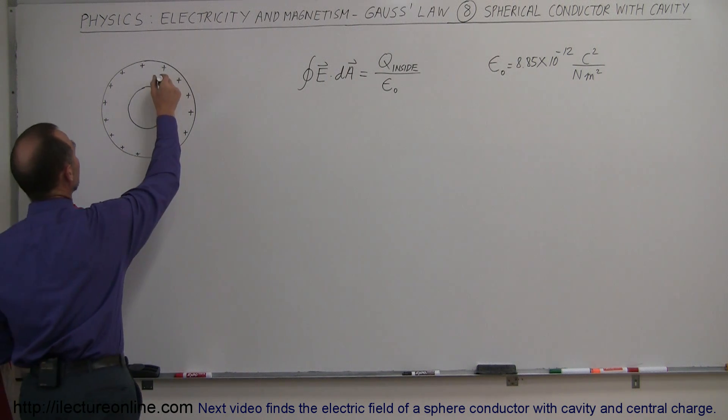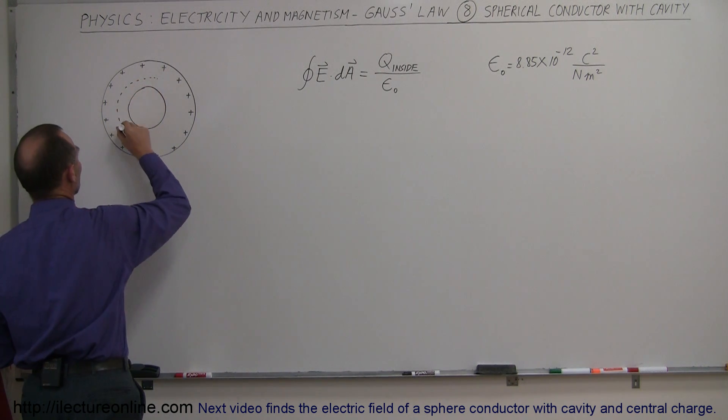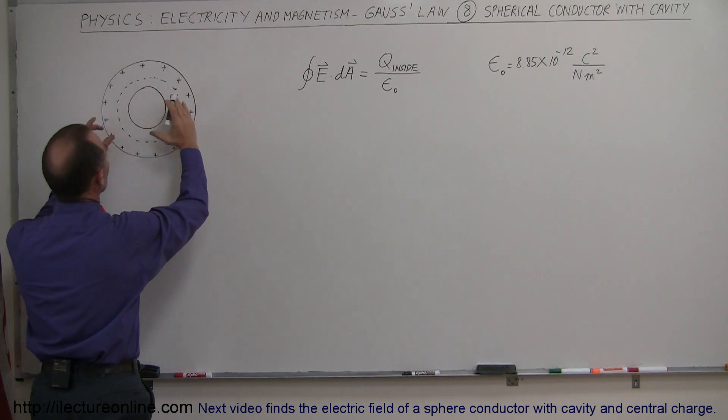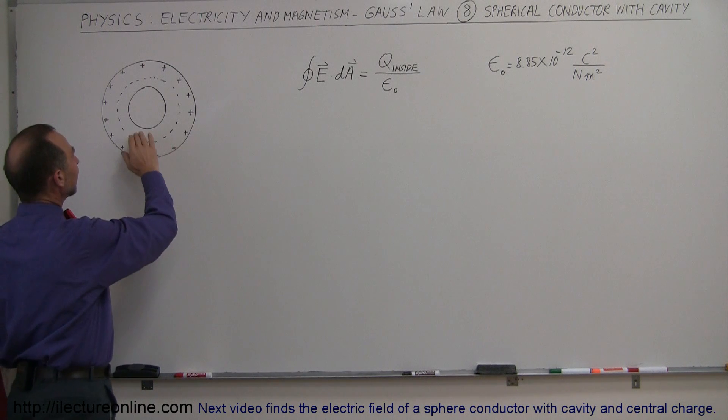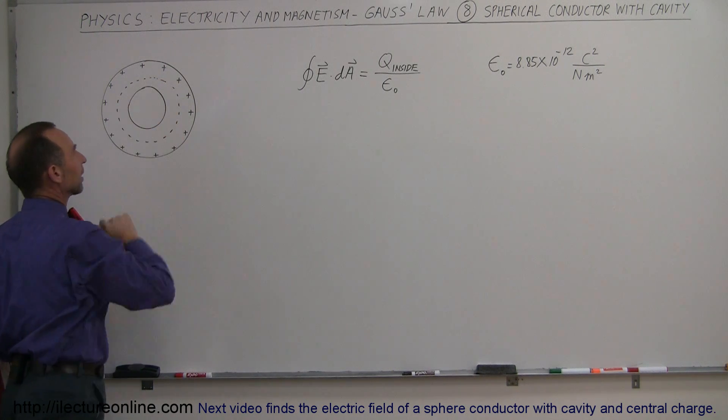If we draw a Gaussian surface, like a spherical shaped Gaussian surface inside the conductor and including the cavity inside, notice that in that case there is no charge inside the Gaussian surface.